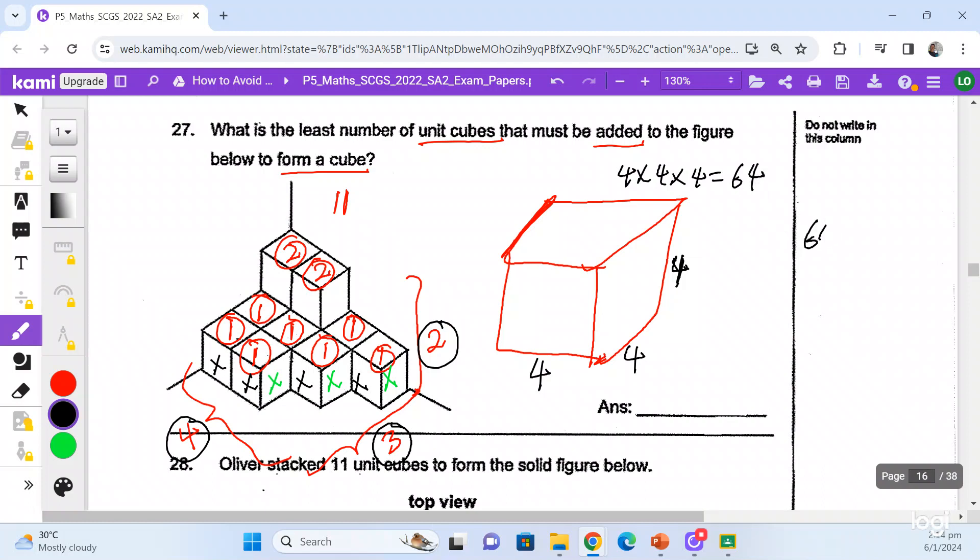So I will need to take 64 minus 11. And I will get 53. So I will need to add another 53 more smaller cubes. And then I will be able to form a bigger cube on the right side.